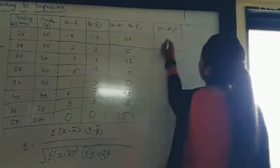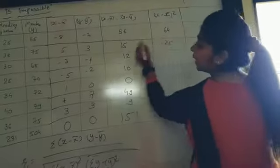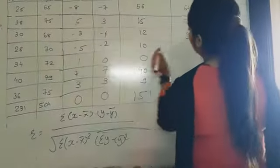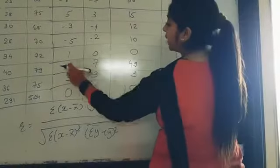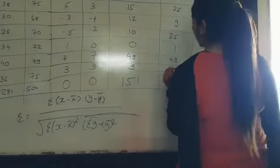So minus 8 square is 64. 5 square is 25. Minus 3 square is 9. Minus 5 is plus 25. 1 square is 1. 7 square is 49. 3 square is 9.